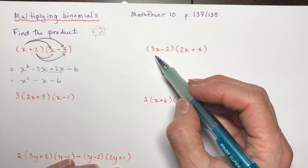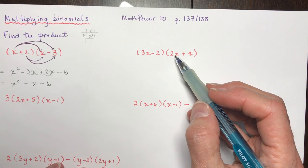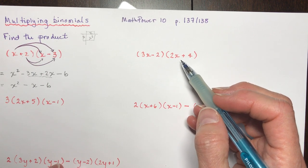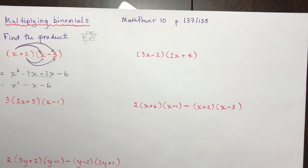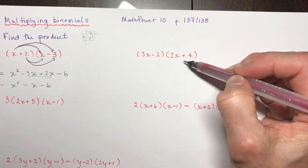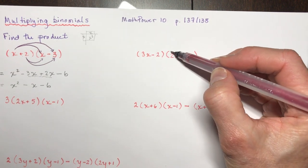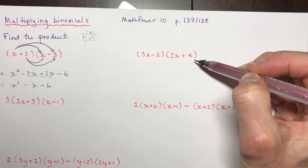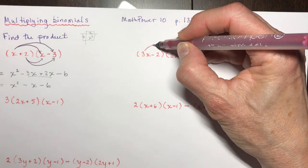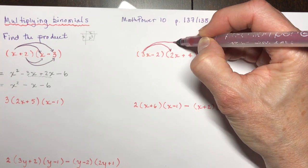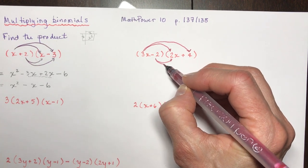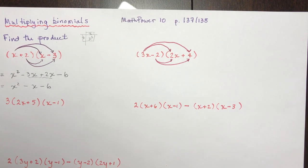Okay, again I'm going to expand. Sometimes it says 'expand and simplify' — that's another way of describing this work. Some students get mixed up about what they're supposed to do. Here I have (3x minus 2) in this bracket and I'm multiplying all of that by everything in the second bracket. I take the first term and multiply by each term in the second bracket, then take the second term with its sign and multiply by each term.